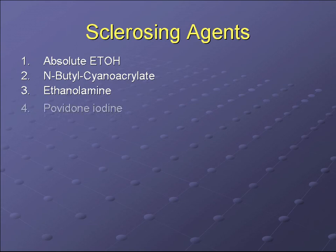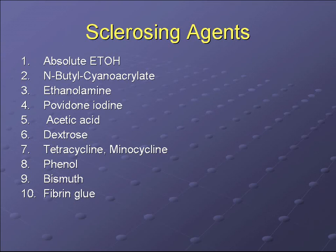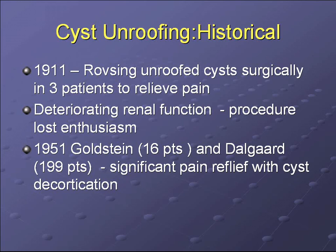Various sclerosing agents have been used. The most common is 99% ethanol. Others include N-butyl cyanoacrylate, ethanolamine, povidone, acetic acid, dextrose, tetracycline and minocycline, phenol, bismuth, fibrin glue, and glucose.